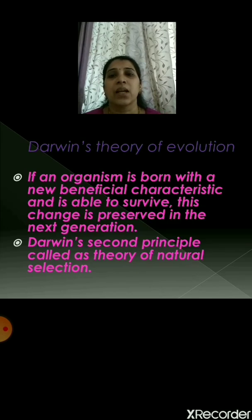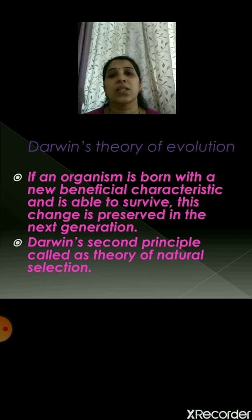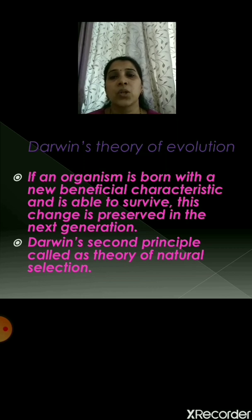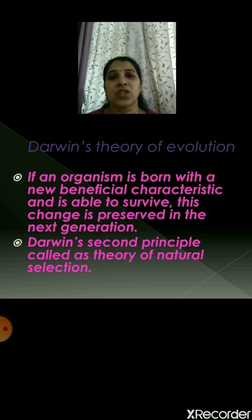Then Darwin made a second principle: if an organism is born with a new beneficial characteristic and is able to survive, this change is preserved in the next generation. This is Darwin's second principle and he called it the theory of natural selection. If asked about Darwin's second principle, you write: if an organism is born with a new beneficial characteristic and is able to survive, this change is preserved in the next generation.